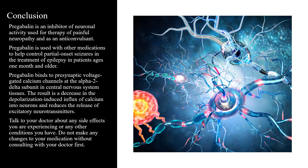In conclusion, pregabalin is an inhibitor of neuronal activity used for therapy of painful neuropathy and as an anticonvulsant. Pregabalin is used with other medications to help control partial onset seizures in the treatment of epilepsy in patients ages one month and older. Pregabalin binds to presynaptic voltage-gated calcium channels at the alpha-2-delta subunit in the central nervous system tissues, decreasing the depolarization-induced influx of calcium into neurons and reducing the release of excitatory neurotransmitters. Talk to your doctor about any side effects you are experiencing or any other conditions you have. Do not make any changes to your medication without consulting with your doctor first.